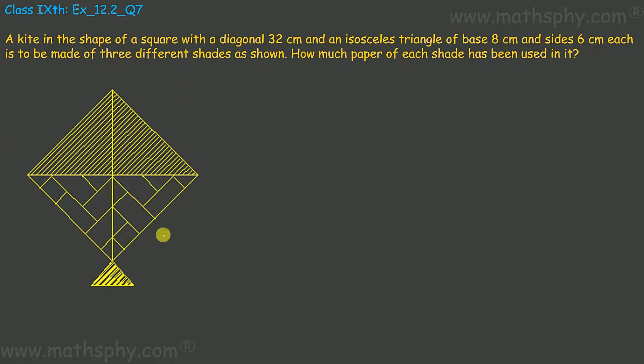We have this kite. This top is a square. This bottom tail is an isosceles triangle where the top is a square with diagonal 32 cm. This isosceles triangle has a base of 8 and sides of 6.